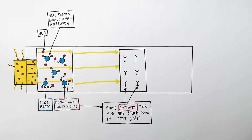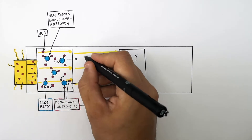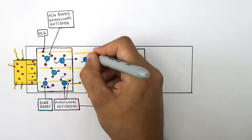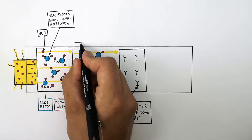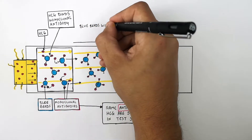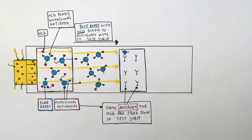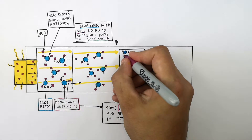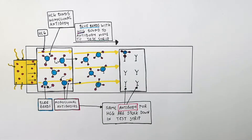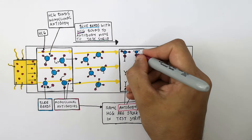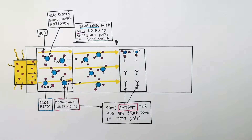The blue beads with the monoclonal antibodies and HCG attached move along to the test strip. The HCG that is attached to the antibody on the blue bead then also attaches to the antibody stuck down in the test strip. The blue dye is now stuck — the beads with HCG bind the antibody in the test strip and remain there.